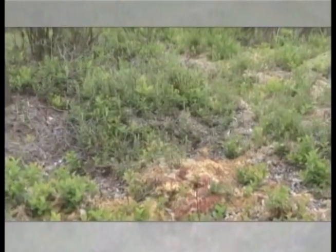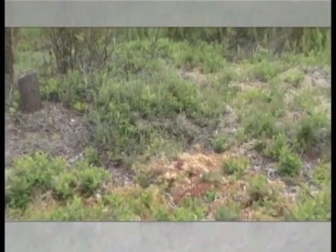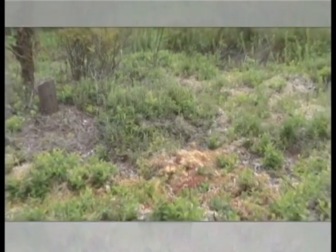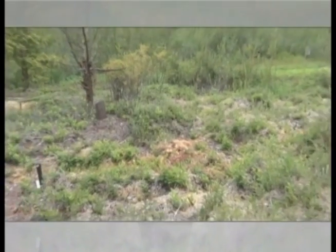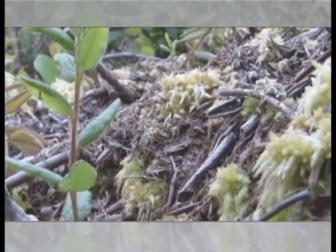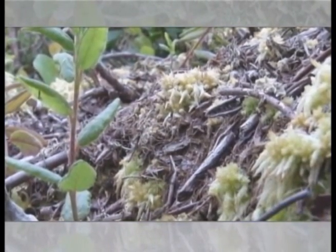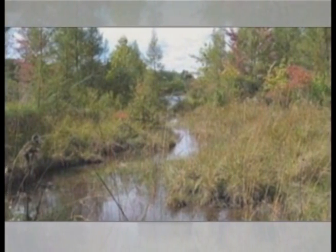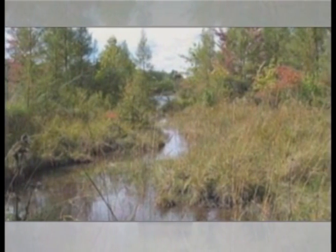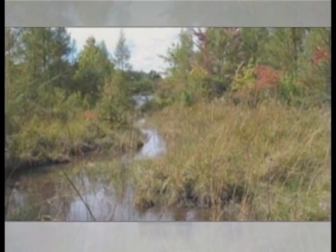Bogs are a special wetland. They're a freshwater wetland composed of spongy peat deposits, evergreen trees, shrubs, and a floor that's covered by a thick moss called sphagnum moss. Fens are freshwater peat-forming wetlands like bogs, but are covered by mostly grasses, sedge, reeds, and wildflowers.